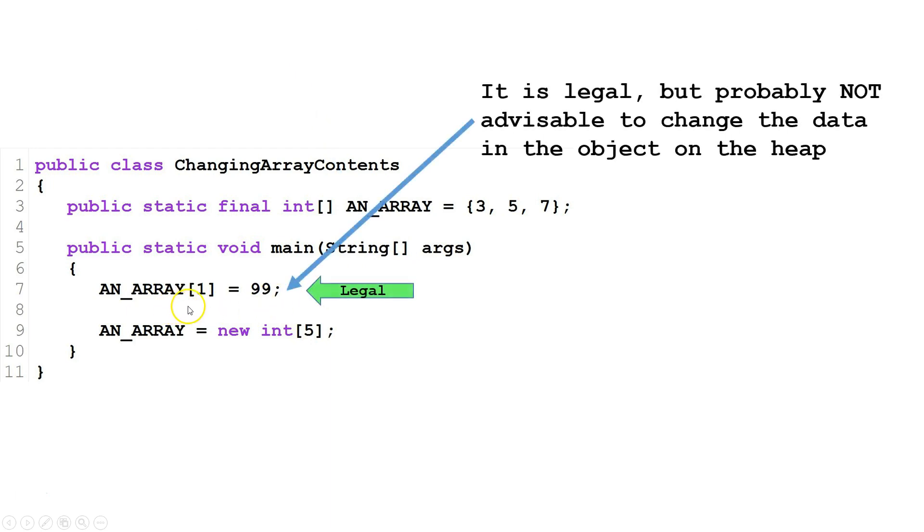Here we are changing the value of index 1 to 99. This is legal because we are not changing the value of an array, an array is pointing to an object on the heap. We are changing the value of the object itself.